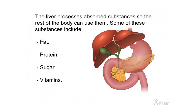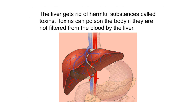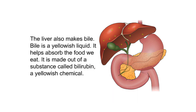The liver processes absorbed substances so the rest of the body can use them. Some of these substances include fat, protein, sugar, and vitamins. The liver also gets rid of harmful substances called toxins. Toxins can poison the body if they are not filtered from the blood by the liver.